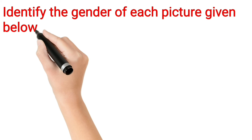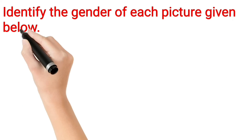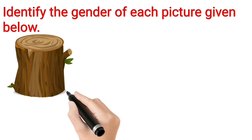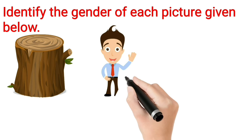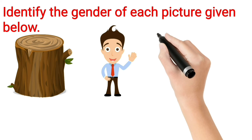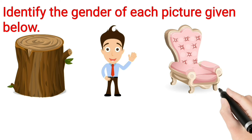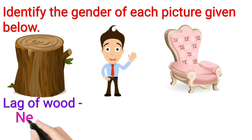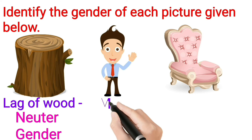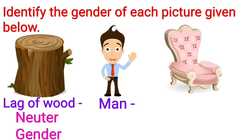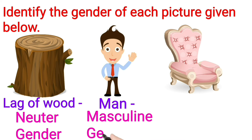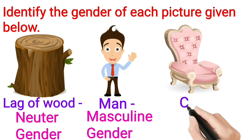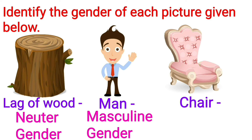Identify the gender of each picture given below. First one: Log of wood — Neuter Gender. Second one: Man — Masculine Gender. Third one: Chair — Neuter Gender.